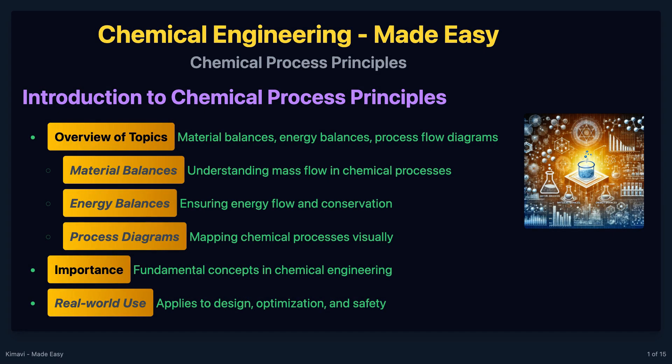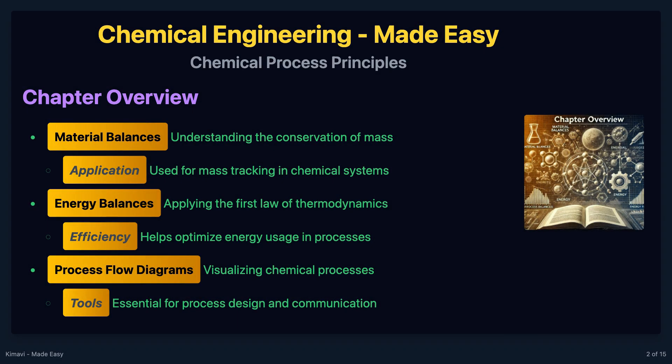Welcome to the chapter on Chemical Process Principles. These fundamental concepts form the backbone of chemical engineering. In this chapter, we will explore material balances, energy balances, and process flow diagrams. These principles are essential for analyzing and designing chemical processes.